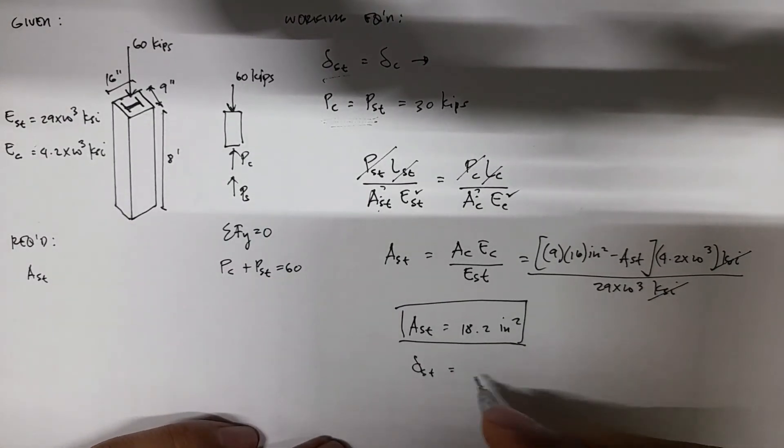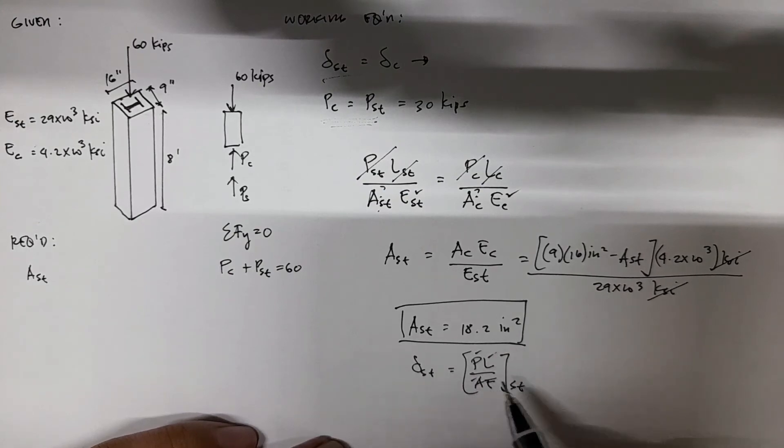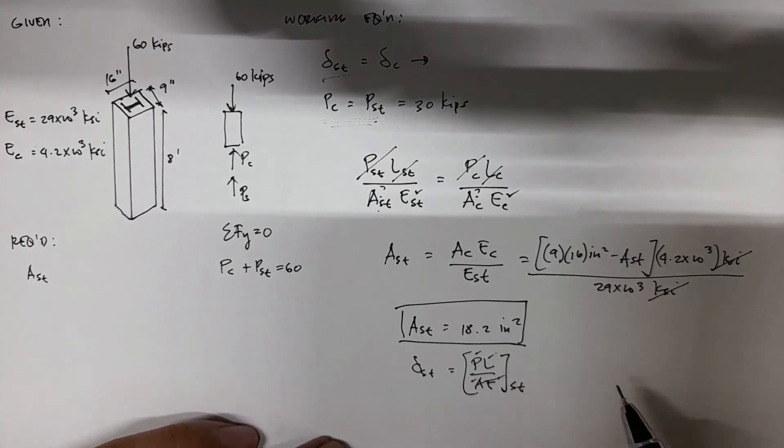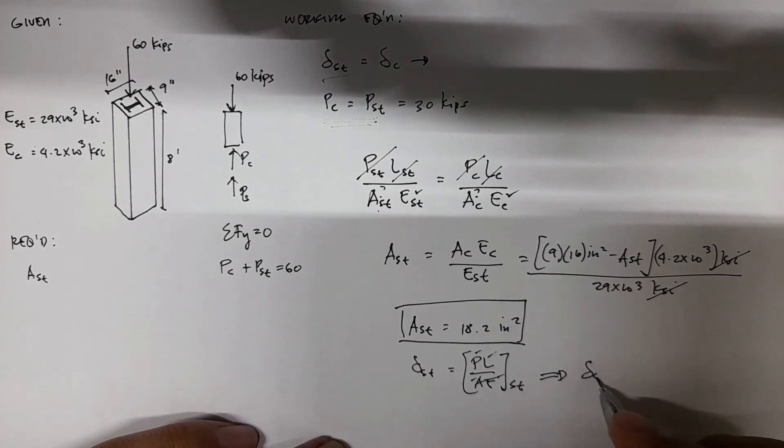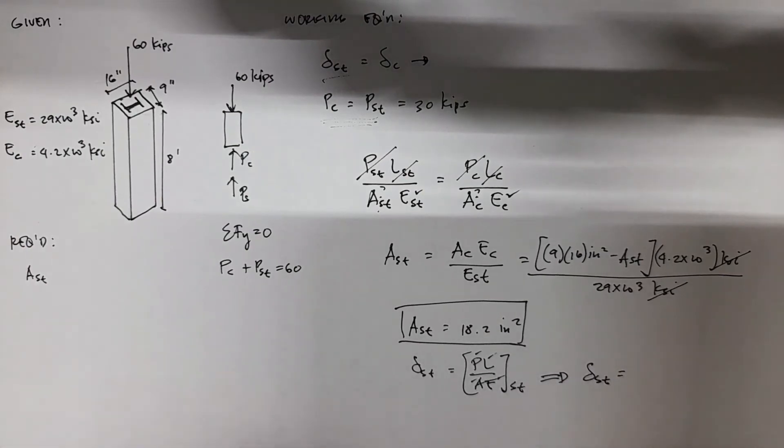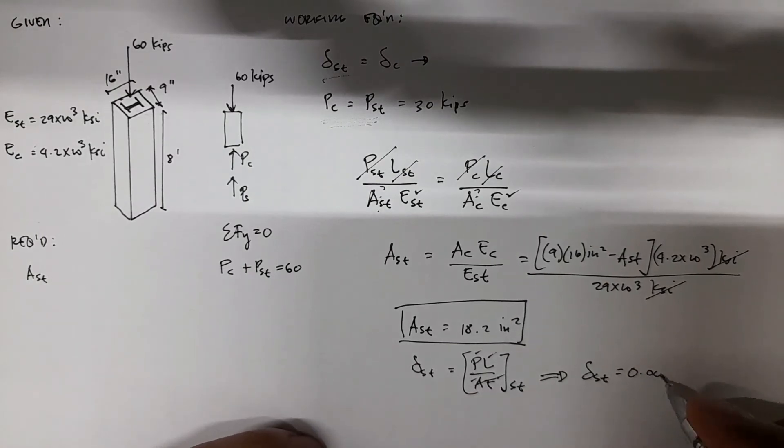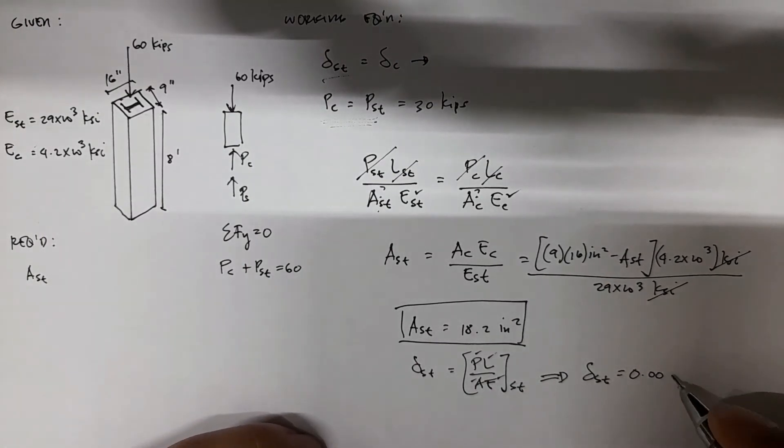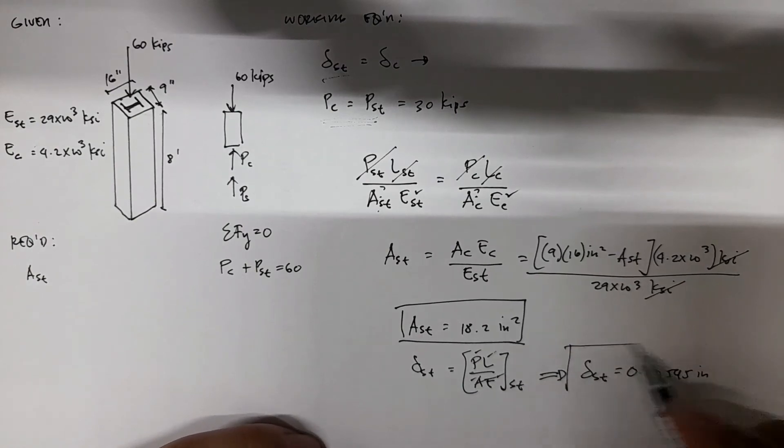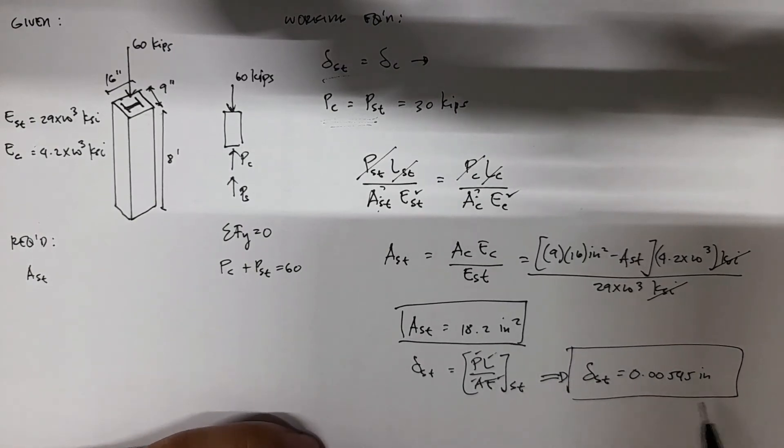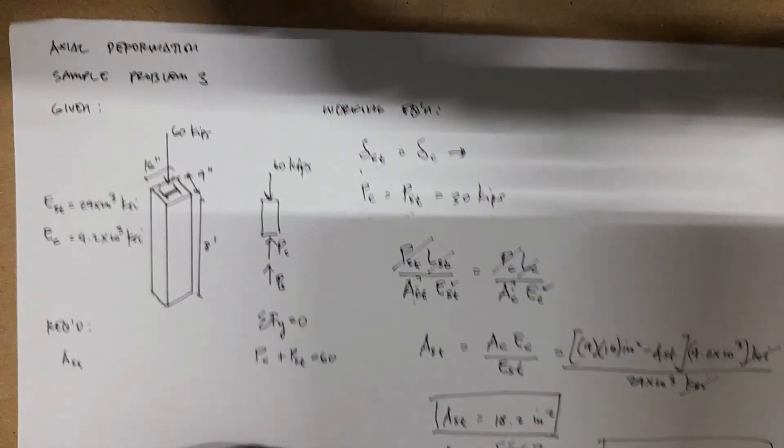Just have to use P × L over A × E of steel. All values are known, so we'll have deformation of steel equal to 0.00545 inches.